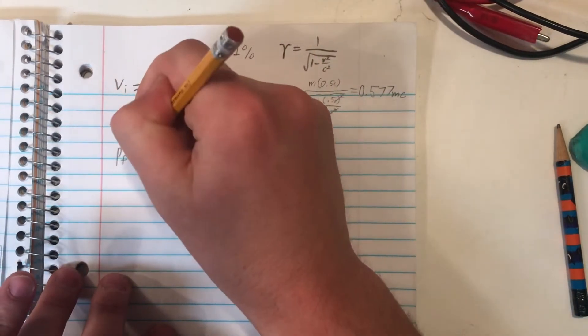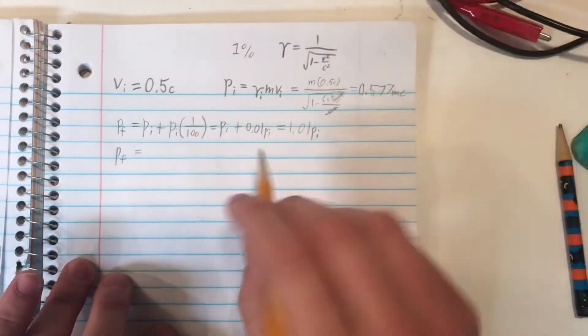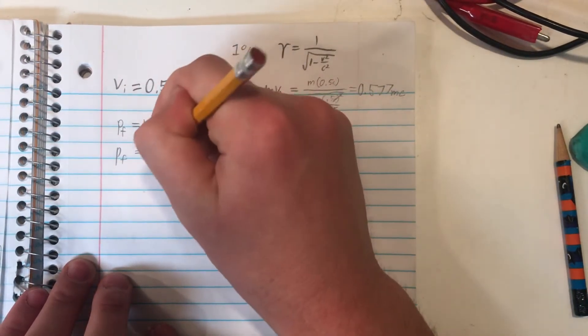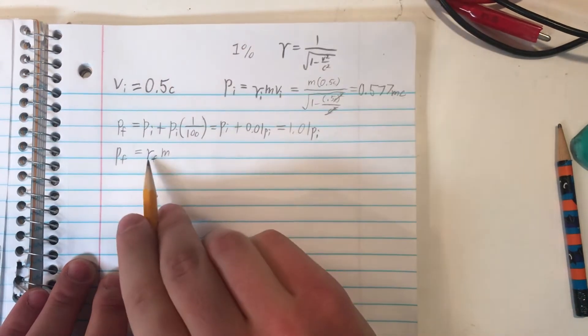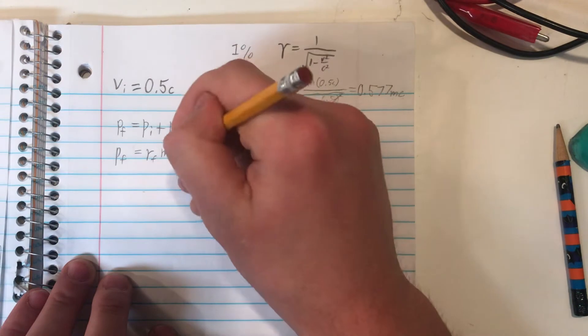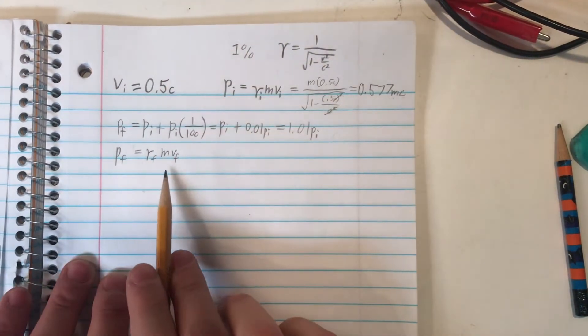And remember, the final momentum can also be written in the same way we wrote our initial momentum, where it's the Lorentz factor, except the final version of that, because the Lorentz factor is based on the velocity, times the mass, times the final velocity, and that's what we're trying to find.